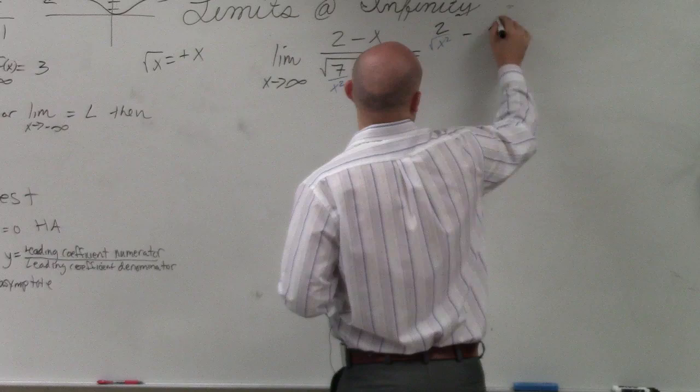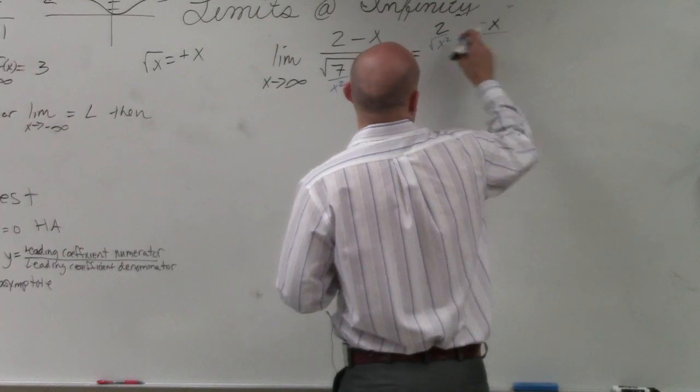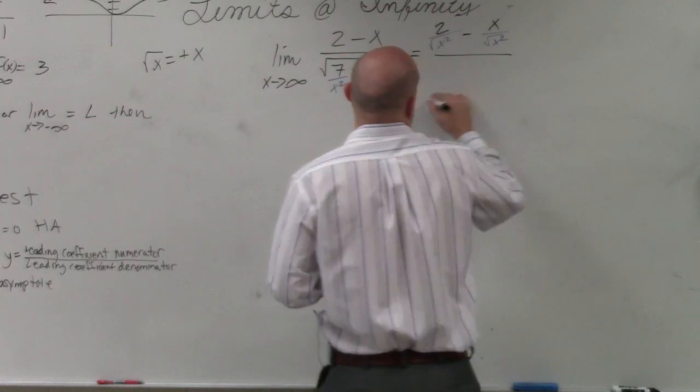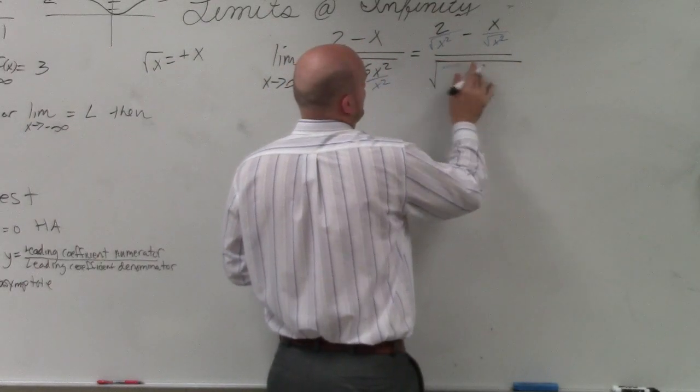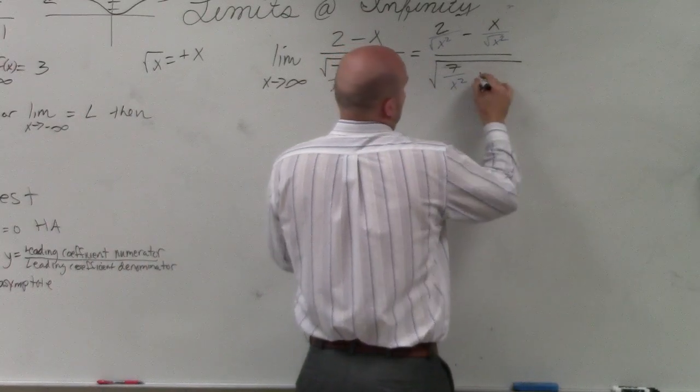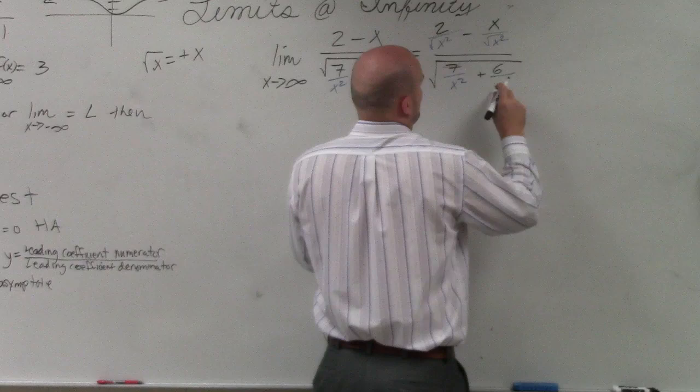x squared minus x over square root of x squared, divided by square root of 7 over x squared plus 6 over x squared.